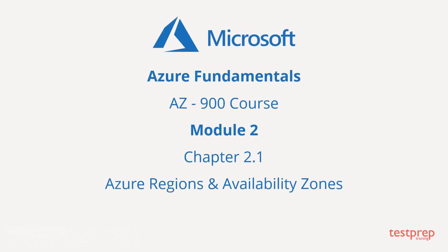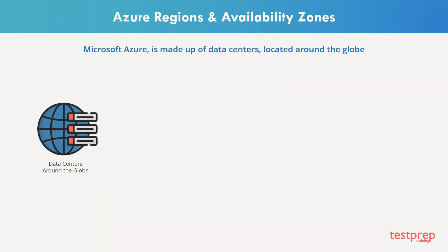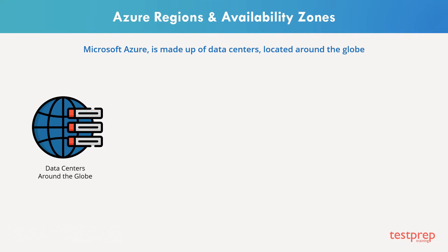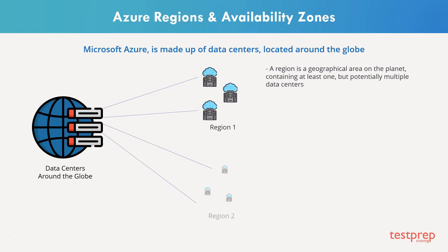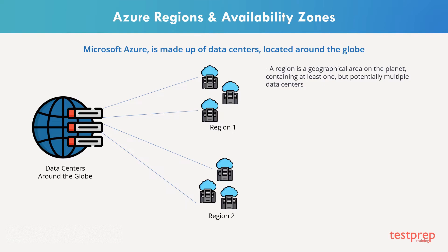In this module, we'll talk about Azure's architectural components. Microsoft Azure is made up of data centers located around the globe. These data centers are organized and made available to end users by regions. A region is a geographical area on the planet containing at least one, but potentially multiple data centers.